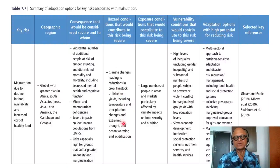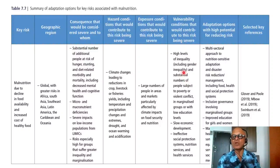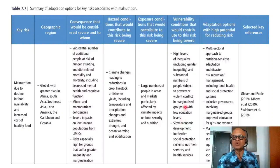Exposure conditions include large numbers of people in areas and markets particularly affected by climate impacts on food security and nutrition. Vulnerability conditions include high levels of inequality including gender inequality, substantial numbers of people subject to poverty or violent conflict, marginalized groups, and low education levels. Slow economic development, ineffective social protection systems, nutrition services, and health services all exacerbate health risks.